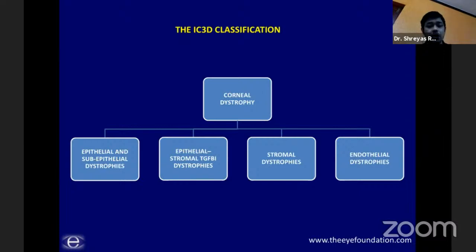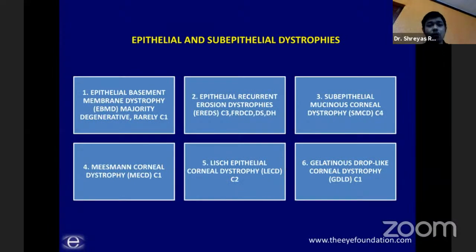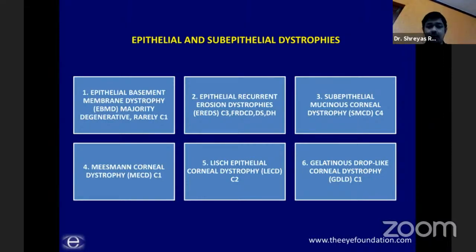Even with anatomical classification, we have the classic epithelial group, then epithelial and anterior stromal grouped together as TGF-beta-1 dystrophies, and then stromal and endothelial. Today I will be restricting my talk to the first two groups — the epithelial, sub-epithelial, and the epithelial stromal or TGF-beta-1 dystrophies. There are six epithelial and sub-epithelial dystrophies, the most common being EBMD — epithelial basement membrane dystrophy. I will cover the salient clinical features of each, with specific characteristics of the less common ones like Meesman and Leish that are worthwhile to remember for examinations.